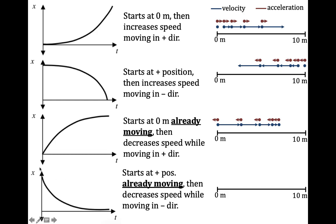The last example starts at a positive position, already moving with a negative slope — moving to the left — and the slope is getting more and more shallow, so it must be decreasing speed while moving in the negative direction. We're going to have something very similar to the previous example, but in the opposite direction.